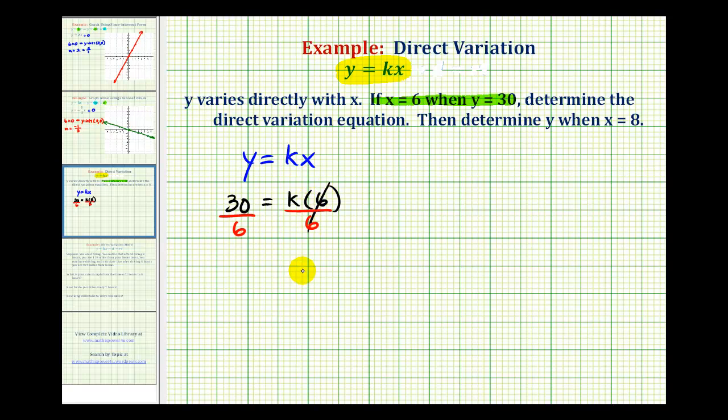This simplifies to 1, so we have k equals 30 divided by 6, which would be 5. Now that we know k is equal to 5, the direct variation equation for this situation is y equals k times x, or 5 times x.